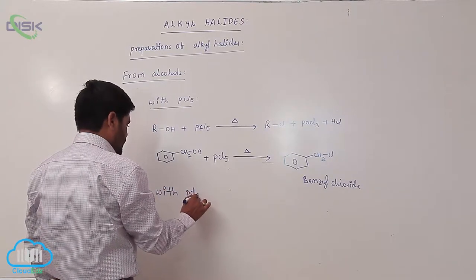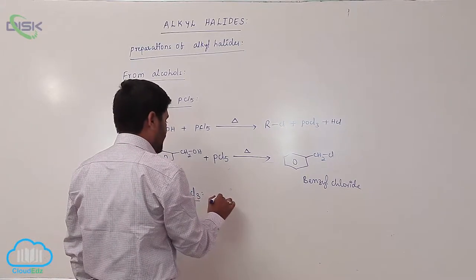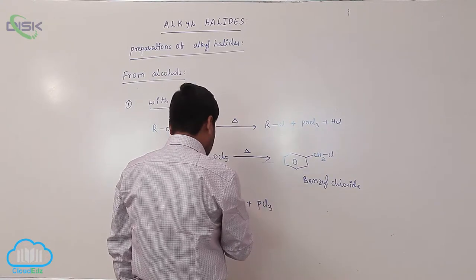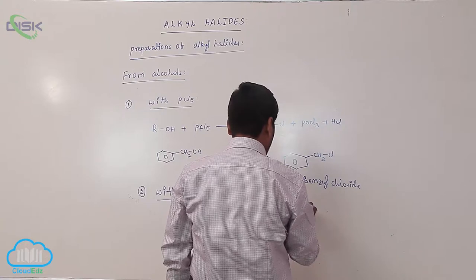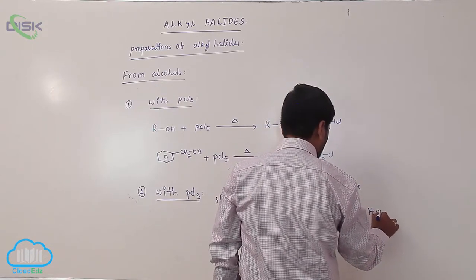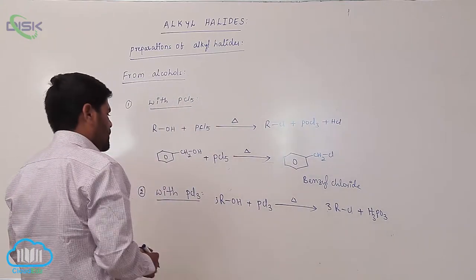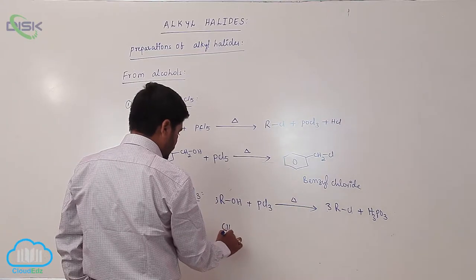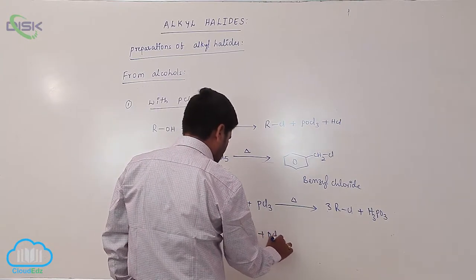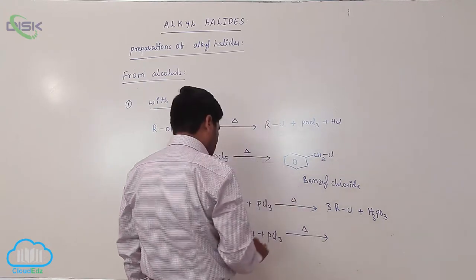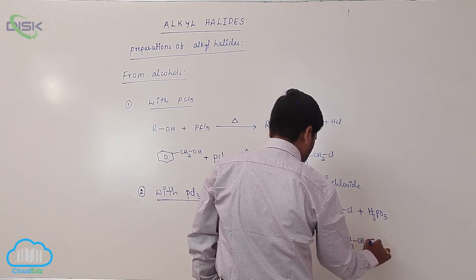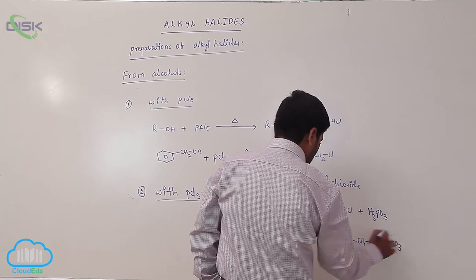Second reaction: with phosphorus trichloride. An alcohol reacts with PCl₃ to form 3 moles of alkyl chloride and phosphorous acid. For example, 3 moles of ethyl alcohol react with PCl₃ to form 3 moles of ethyl chloride and phosphorous acid.